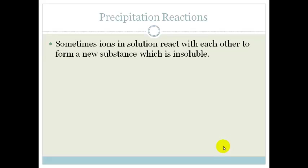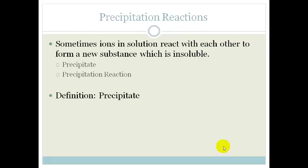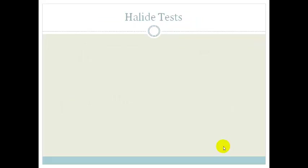So let's talk about precipitation. Sometimes ions in solution react with each other to form a new substance which is insoluble. In other words, it doesn't dissolve. This substance is called a precipitate, and the reaction is called a precipitation reaction. A precipitate is a solid that forms in a solution during a chemical reaction. Now what's cool about this is that we can use precipitates to test for different things.